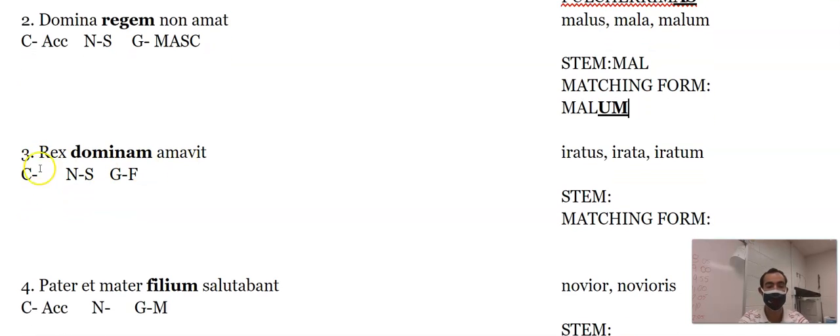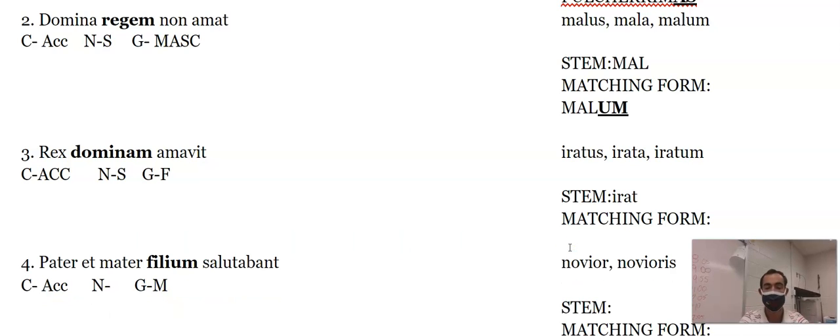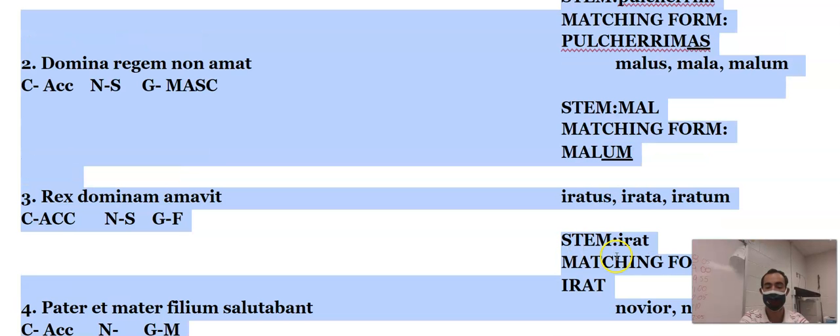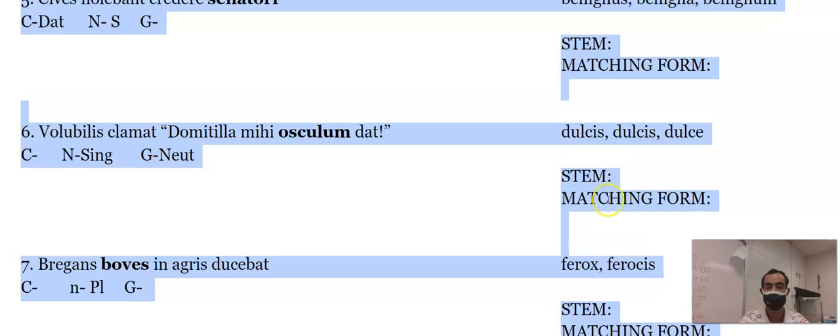Dominum is a female master, so it only makes sense that the gender is female. And with an am, that's accusative. The stem for iratus, it's just like malus. You take off the a, that's the stem. So the matching form is iratam with an am.